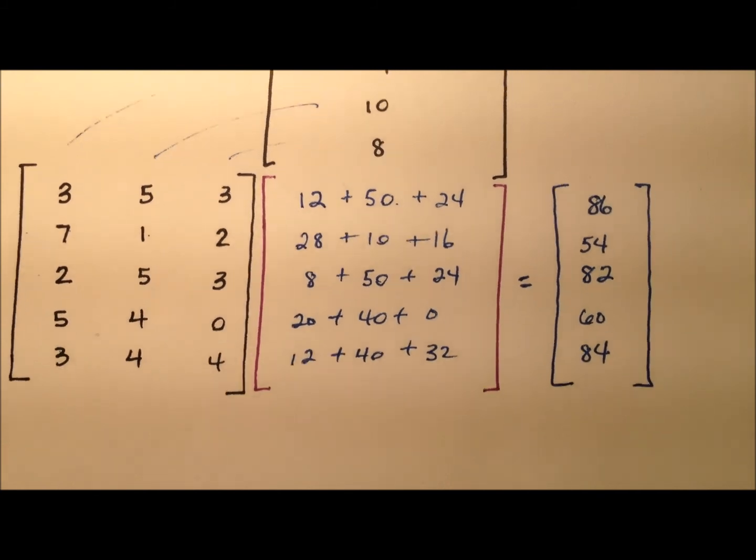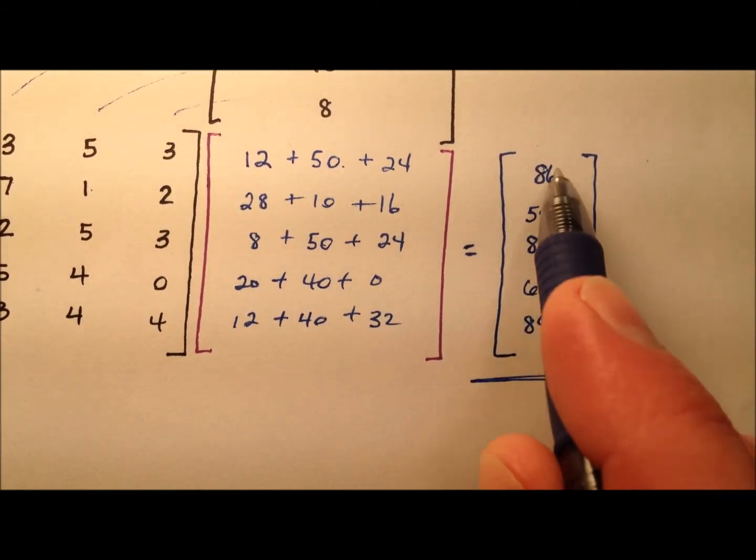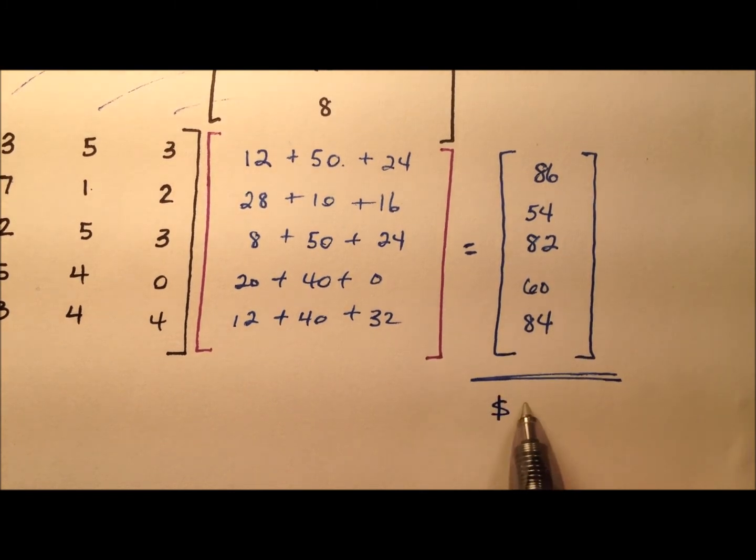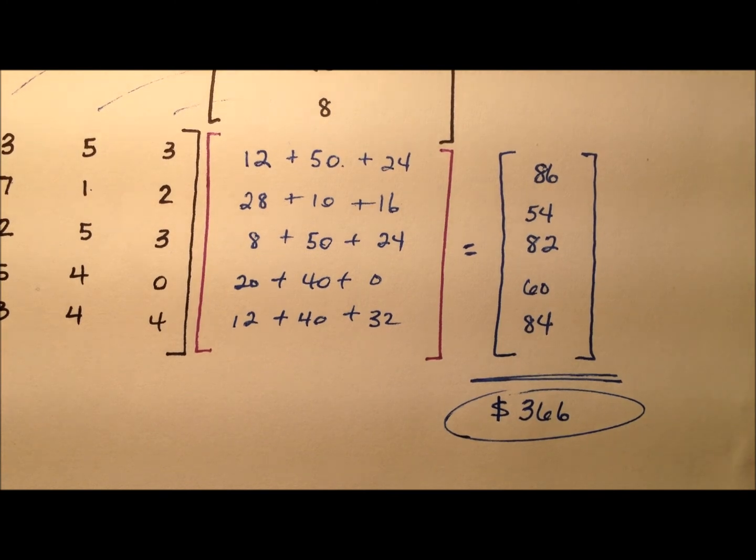And if you wanted to, there's no matrix operation for this, but you could go ahead and just add up all these entries. And let's see, it should be like $366. And you would see that's how much she made for the entire week.